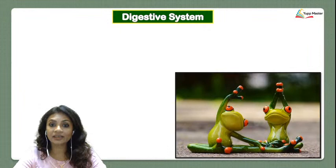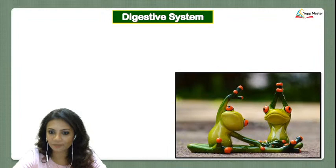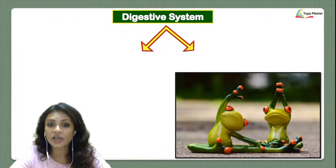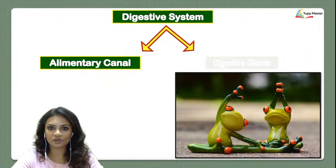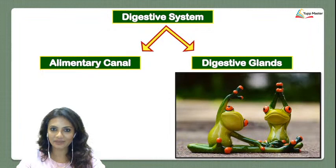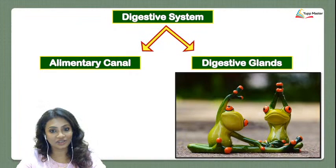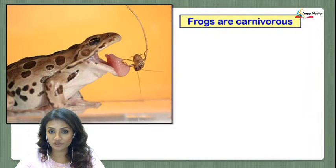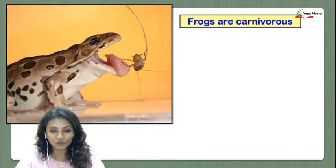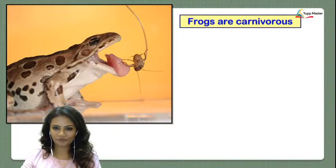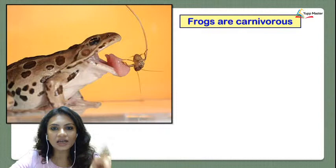Just like in humans, the digestive system of the frog is divided into two parts: the alimentary canal — the whole tube — and the digestive glands. Frogs are carnivorous, and you should observe the tongue closely. The tongue is not attached at the back but at the front.